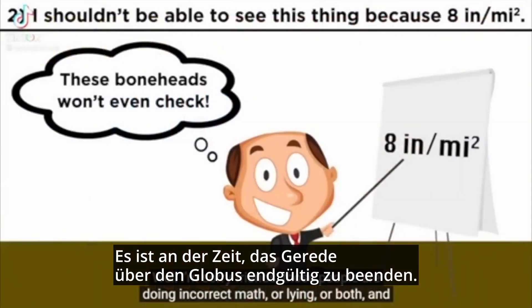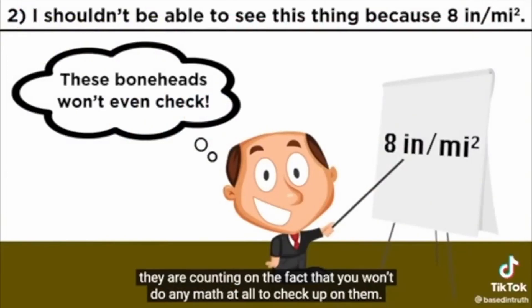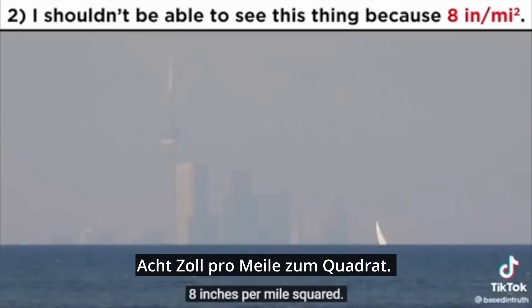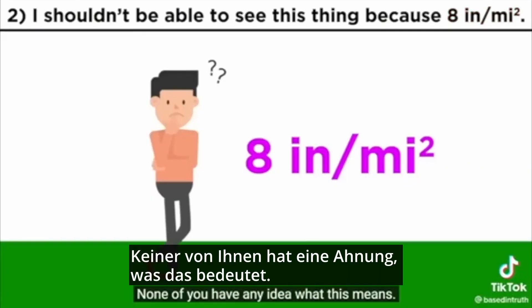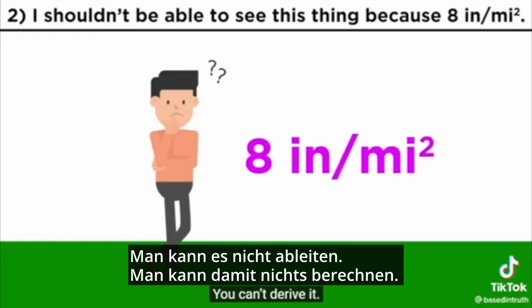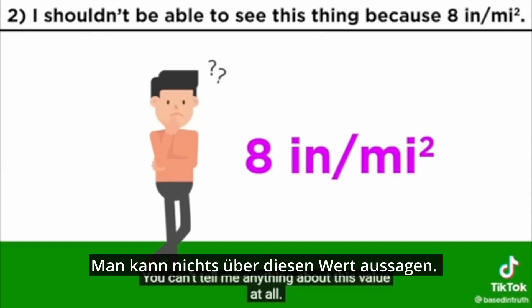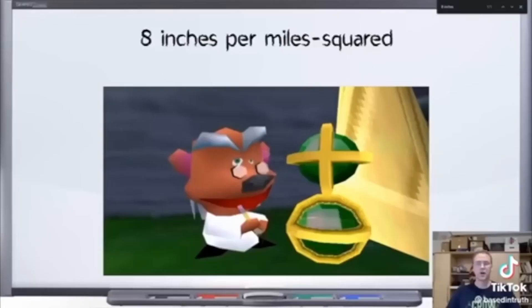It is time to end a globe talking point for good. Eight inches per mile squared is not a valid way to measure Earth's curvature. None of you have any idea what this means. You can't derive it. You can't calculate anything with it. You can't make a prediction with it. You can't tell me anything about this value at all.